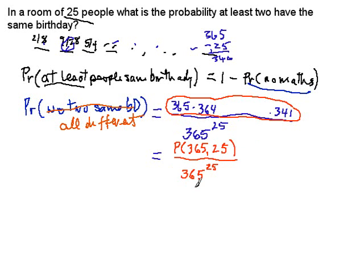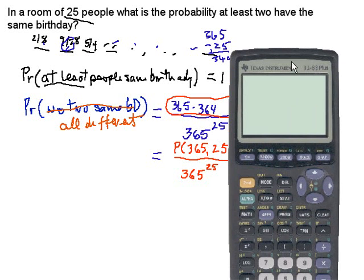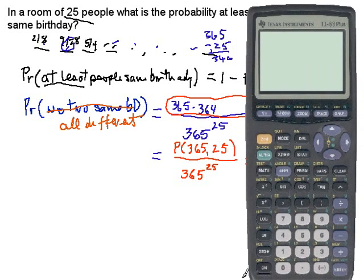So that's a little more succinct way of writing it and actually makes it reasonable so that I can calculate this on a calculator. Let's see what we can do here. Let's calculate the permutations of 365 taken 25 times.